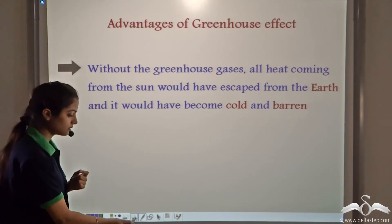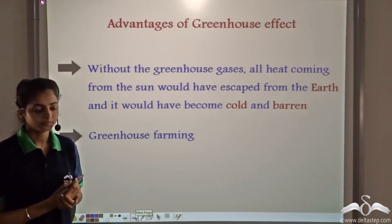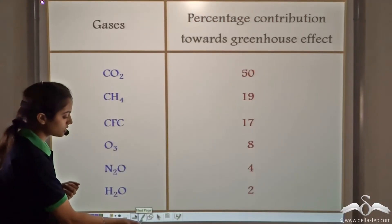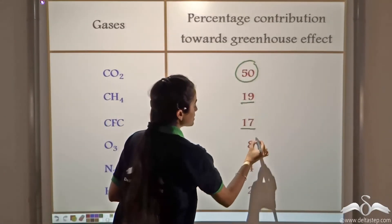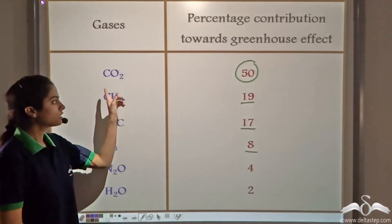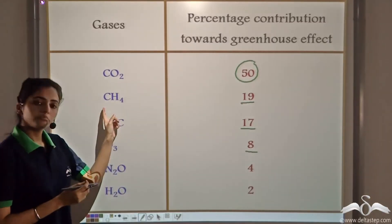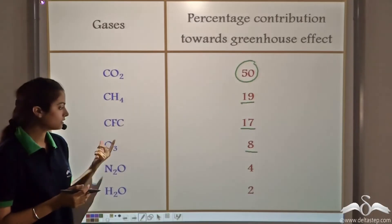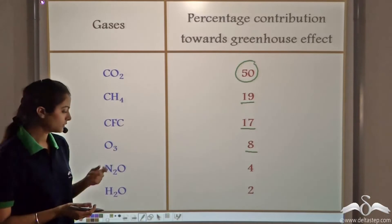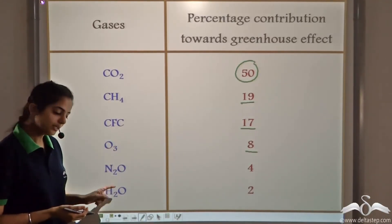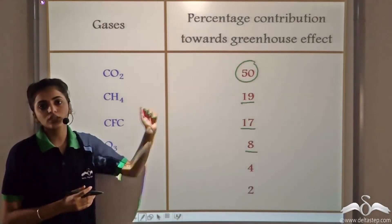Another important use of greenhouse effect these days is in greenhouse farming. The natural contribution of the different gases towards the greenhouse effect is as follows: carbon dioxide contributes 50%, methane contributes 19%, CFCs contribute 17%, and ozone, nitrous oxide, and water vapours contribute to different levels to the greenhouse effect.